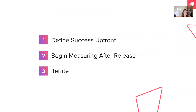The important part when launching a new feature is to define success up front. What does success look like, and what measurements do you need to put in place? Then begin measuring after the release to collect data and understand whether you've reached success. Then you iterate — either you realize your success metric wasn't quite accurate and you adjust it, or you determine how to improve the feature over time to hit that success metric.